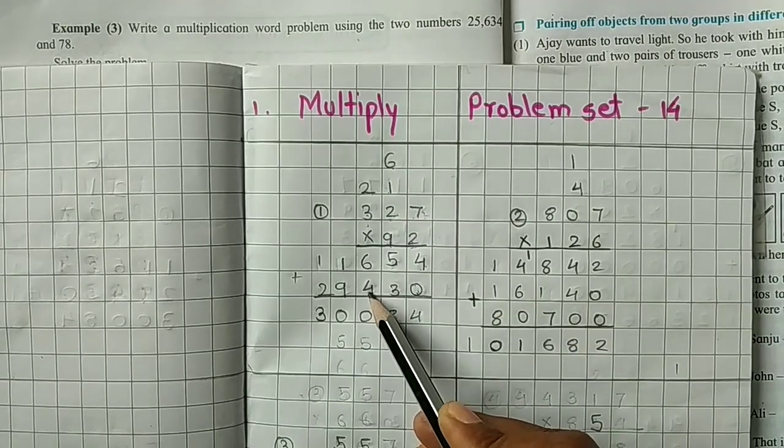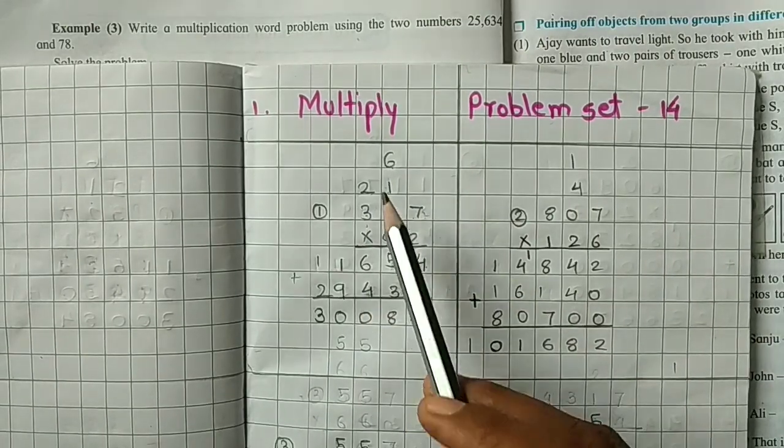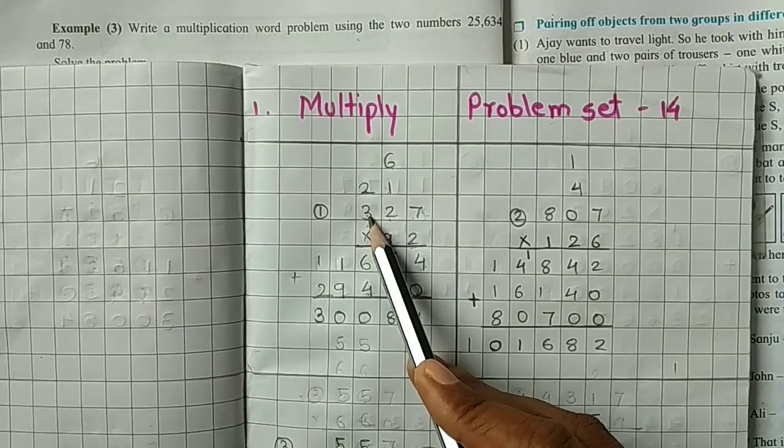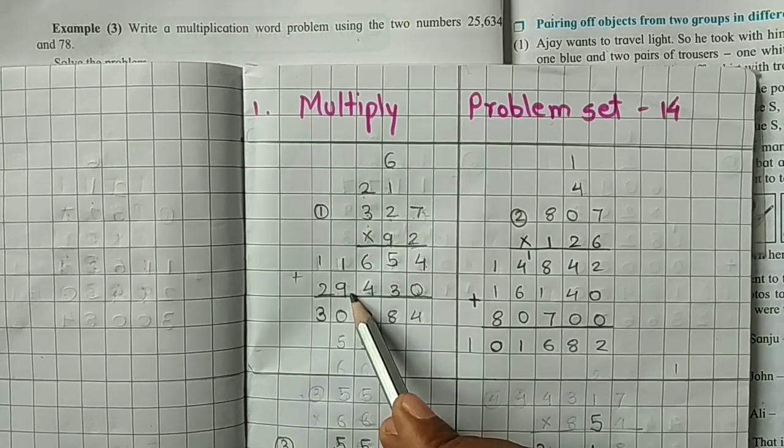24. So 4 write here, 2 carried forward. Next place, 9 times 3 is 27 plus 2, 29.